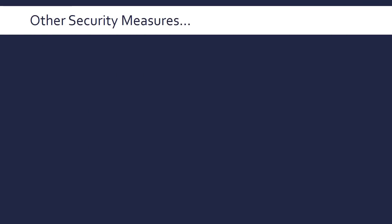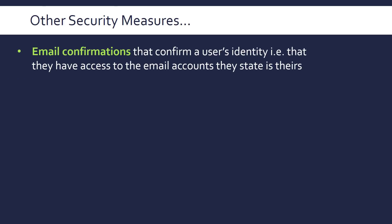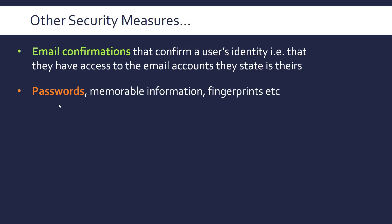Let's end by looking at some security measures suggested by the exam board. First, email confirmations that confirm your identity — that you have access to the email account you claim. This is more important with a work or school email, since only a student would have the email address associated with their school. Also, passwords, biometric information such as fingerprints — using these kinds of measures to log in, for example for banking. The more of these you have, the less chance of a brute force attack working.